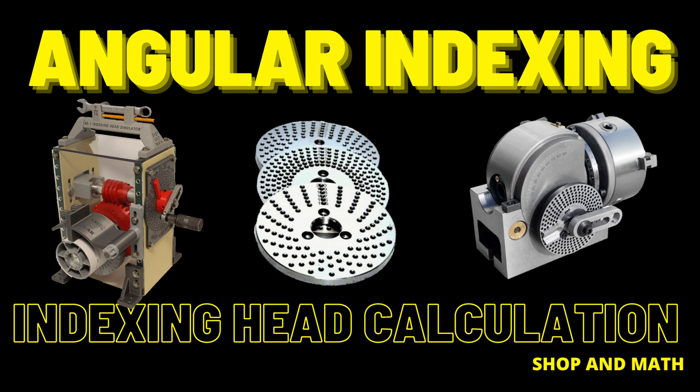The first method is plain or simple indexing. The second method, which is my preferred method, is using the 54-hole plate.